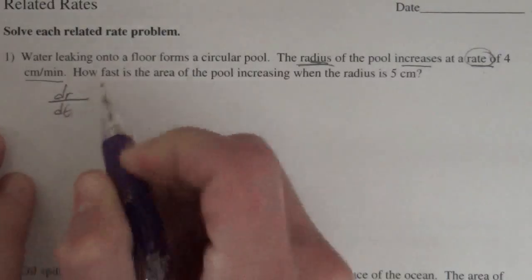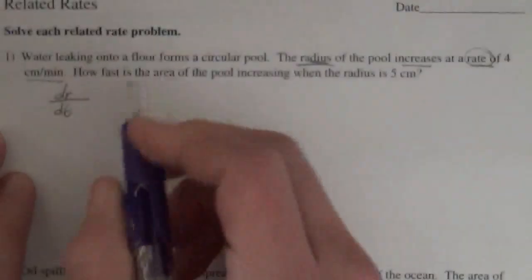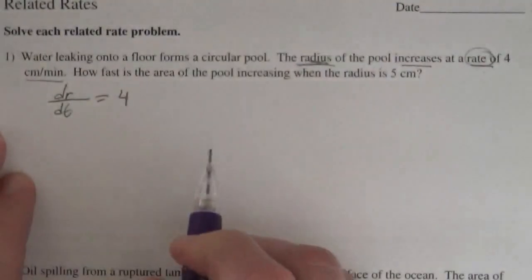So dr/dt, the change in the radius with respect to time, is 4, a positive 4 since it's increasing.